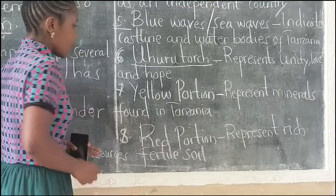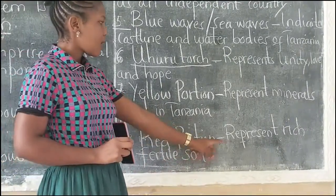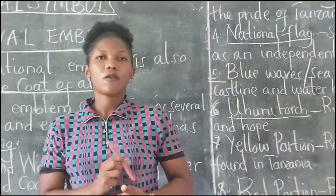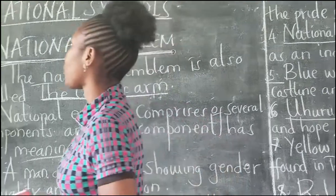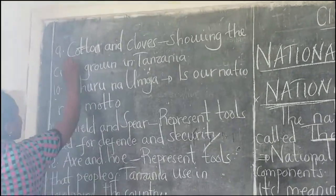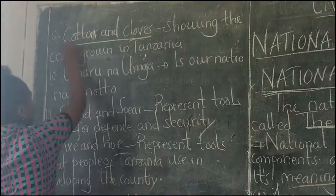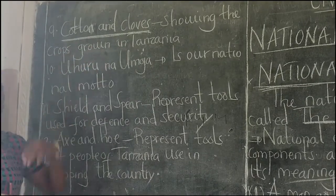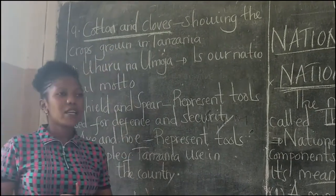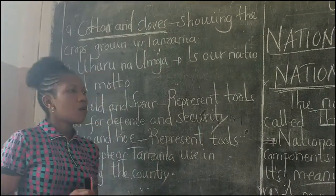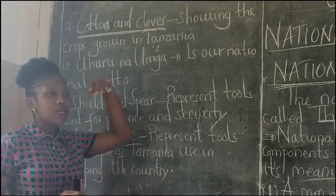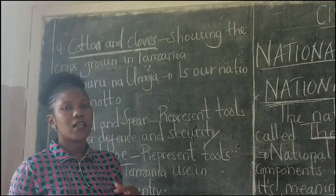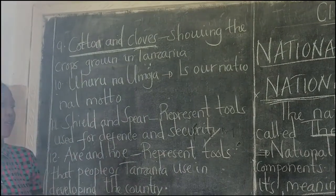Component number eight is the Red Portion. The Red Portion represents rich fertile soil, which is mostly used for agriculture. Component number nine is Cotton and Cloves. This shows the cloves grown in Tanzania. Cotton and Cloves also represent other crops grown in our country like banana, cassava, maize, beans, and so on.